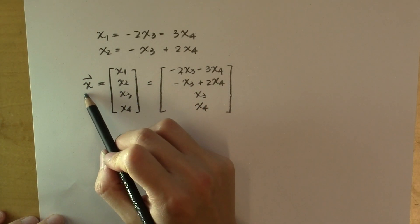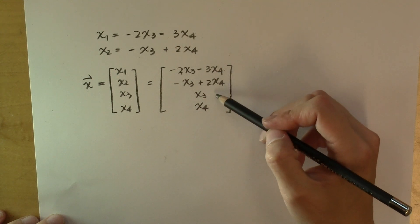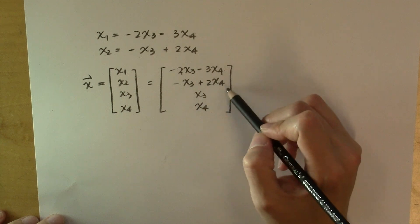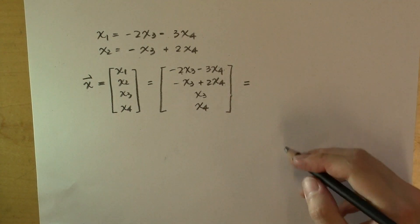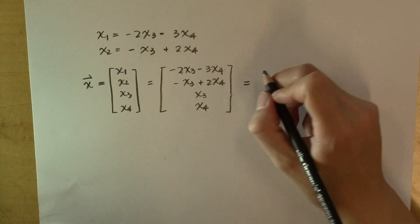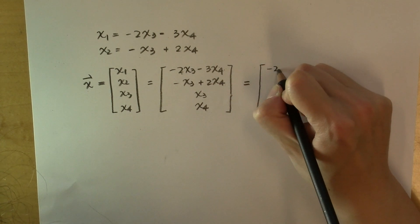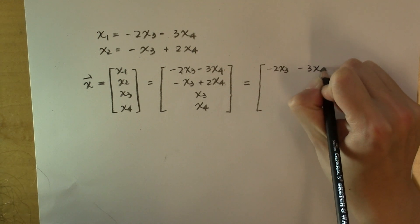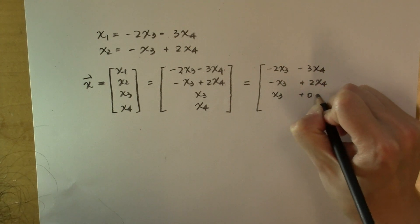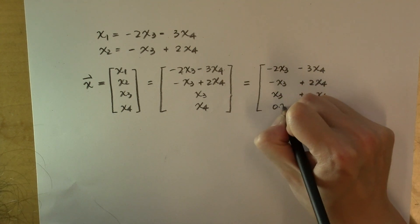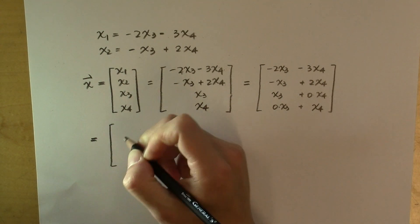So the null space of A contains 4 by 1 vectors x, whose first two components can be expressed in terms of its third and fourth components in such a way. And to write this space in a nicer way so that its structure is more clear, we want to write this vector as a linear combination of a set of vectors. So from this expression, this vector is equal to -2x sub 3 - 3x sub 4, -x sub 3 + 2x sub 4, x sub 3 + 0 times x sub 4, 0 times x sub 3 + x sub 4.